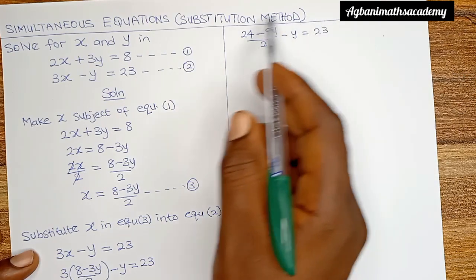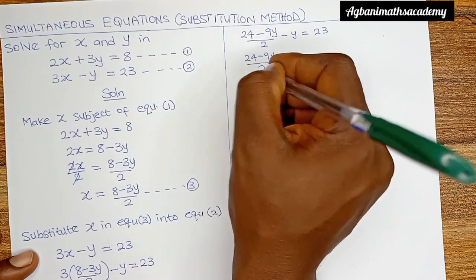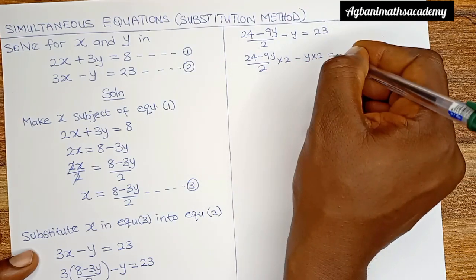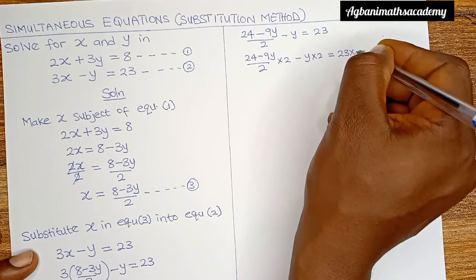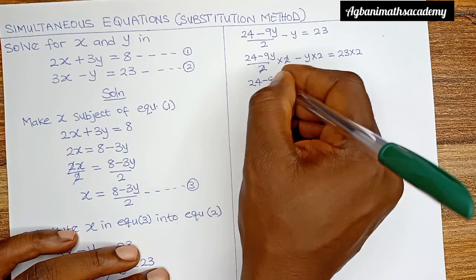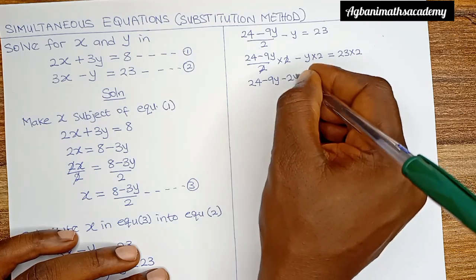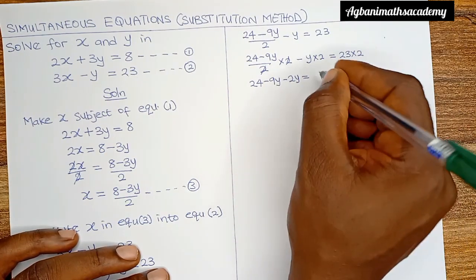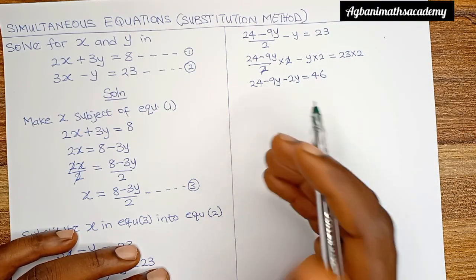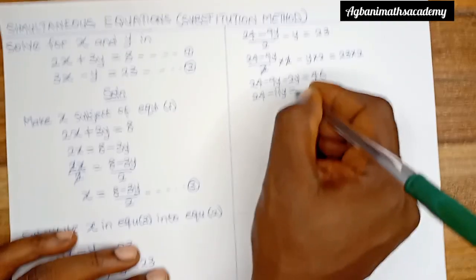In order to eliminate the division by 2, we are going to multiply the entire equation by 2. So 24 minus 9y all over 2 multiplied by 2, minus y multiplied by 2, is equal to 23 multiplied by 2. The 2s cancel, giving us 24 minus 9y, minus 2y is equal to 46. Minus 9y minus 2y gives us minus 11y. So 24 minus 11y is equal to 46.